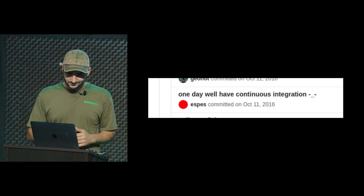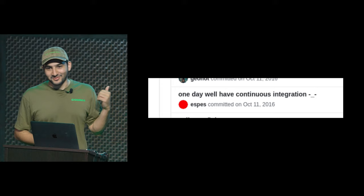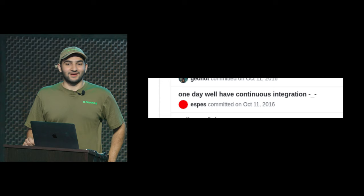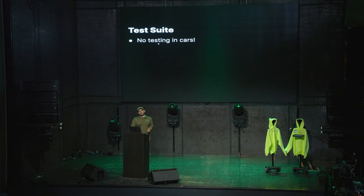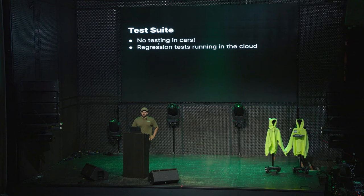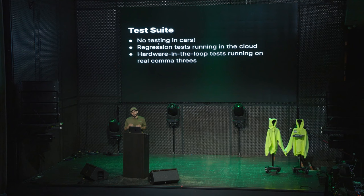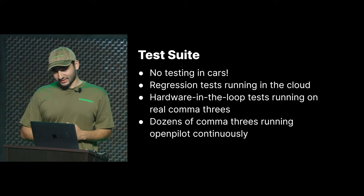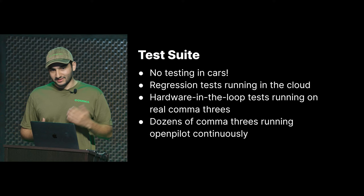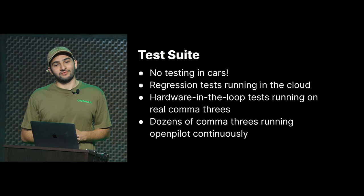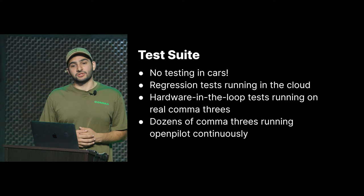Back in 2016, there's a fun commit that says 'one day we'll have CI.' Today we do have CI. We don't test in cars — that's the first principle. If you have to go down to a car, it's slow, all the cars are different, it's not a good loop. So we run regression tests in the cloud with GitHub Actions, we have hardware-in-the-loop tests that run on tons of real Comma 3s, and then we have dozens of Comma 3s running OpenPilot continuously. But the CI is getting so good that these dozens of Comma 3s really don't find anything anymore. The way we can ship things now to OpenPilot master is pretty incredible.